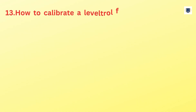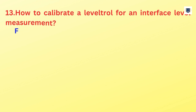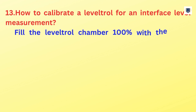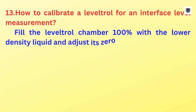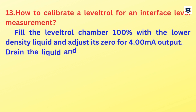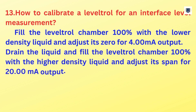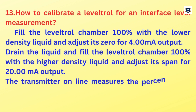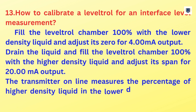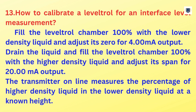How to calibrate a level troll for an interface level measurement? Fill the level troll chamber 100% with the lower density liquid and adjust its zero for 4 milliamps output. Drain the liquid and fill the level troll chamber 100% with the higher density liquid and adjust its span for 20 milliamps output. The transmitter online measures the percentage of higher density liquid in the lower density liquid at a known height.